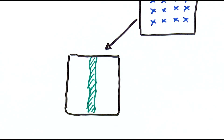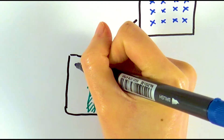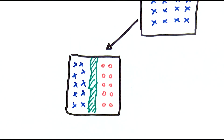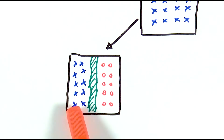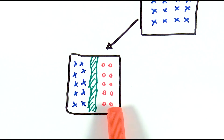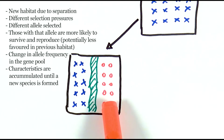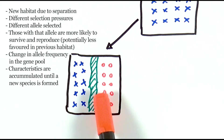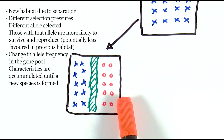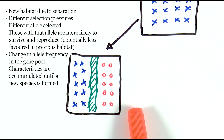In this particular case, they might change significantly. Previously we had all blue crosses representing one particular species, but with underlying genetic variation. Because of that physical barrier, the selection pressure didn't change for one group, but for those on the other side there might be a very different selection pressure. Those with the specific allele that is more favoured in that situation are more likely to survive and reproduce.